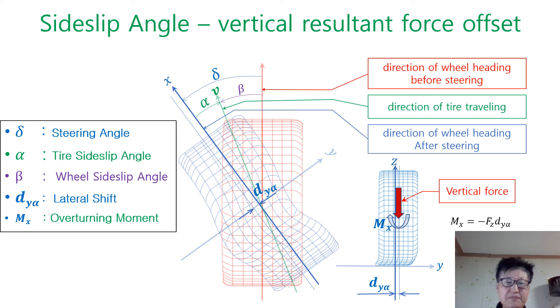The tire side slip angle also causes the lateral offset distance for vertical resultant force due to lateral deformation of tire as shown in the picture. The right picture shows the front view of tire deformation. Acting point of a vertical force moves outward as much as d sub y alpha. And consequently, it creates the overturning moment m sub x about the longitudinal x-axis. And it has the minus moment value in this example.